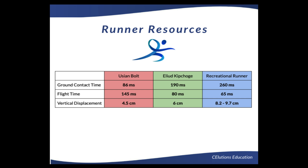So what can we learn from these different running analyses? Usain Bolt's running gait analysis didn't show he was overly efficient, but had great power generation at a high speed, which is why he had great ground contact time, flight time, and vertical displacement. However, Eliud Kipchoge had efficient running economy with good metrics for ground contact time, flight time, and vertical displacement compared to average runners. Therefore, while running watch data is helpful for clinicians, we must pair that with a runner's gait analysis and reference their overall speed to get a complete picture of the athlete's running.